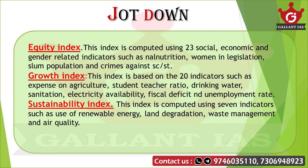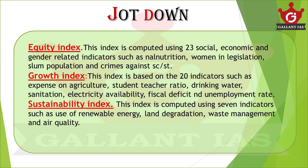Next is the Sustainability Index, which is computed using seven indicators such as use of renewable energy, land degradation, waste management, and air quality. In this index, Kerala, Tamil Nadu, and Telangana performed well, while Uttar Pradesh, Bihar, and Haryana performed badly. These are the important facts related to this particular index, and there is a high chance these facts may be asked in your Prelims.